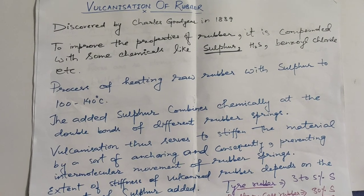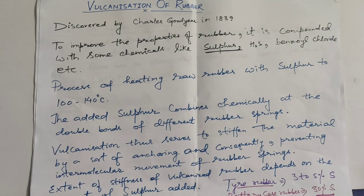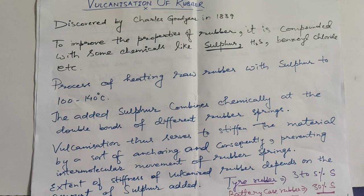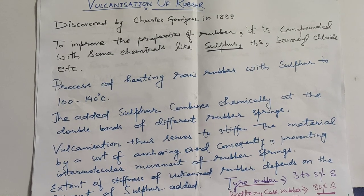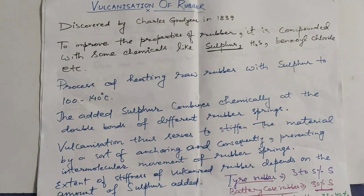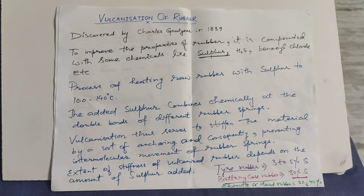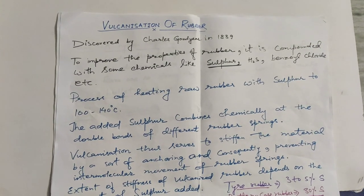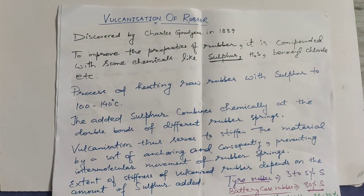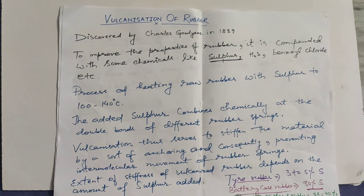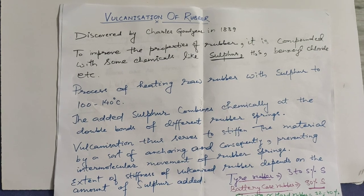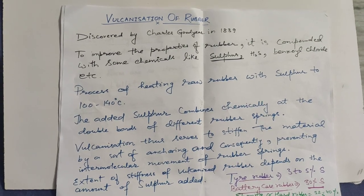Vulcanization serves to stiffen the material by anchoring the chains and preventing intermolecular movement. The extent of stiffness depends on the amount of sulfur added. Tire rubber has 3–5% sulfur, battery case rubber has 30% sulfur, and hard rubber (ebonite) has 32–40% sulfur.